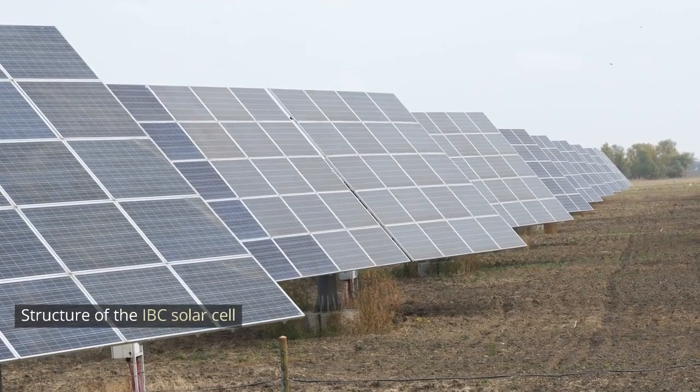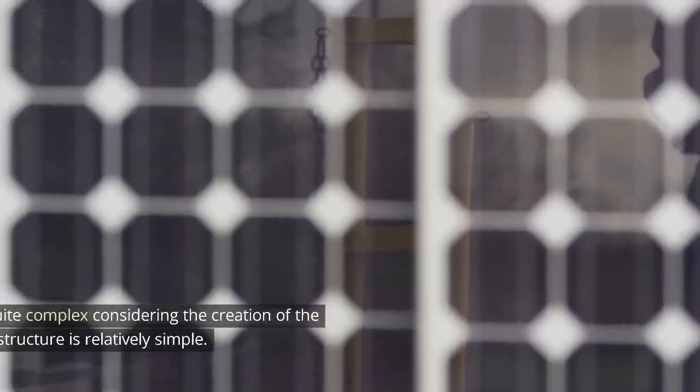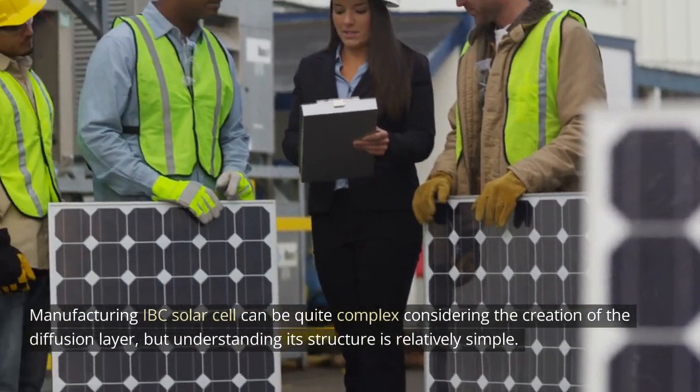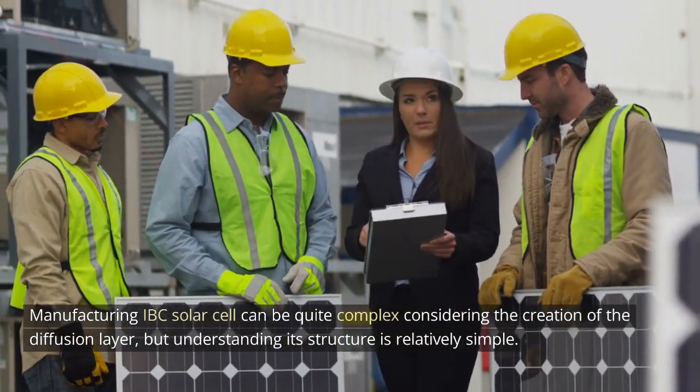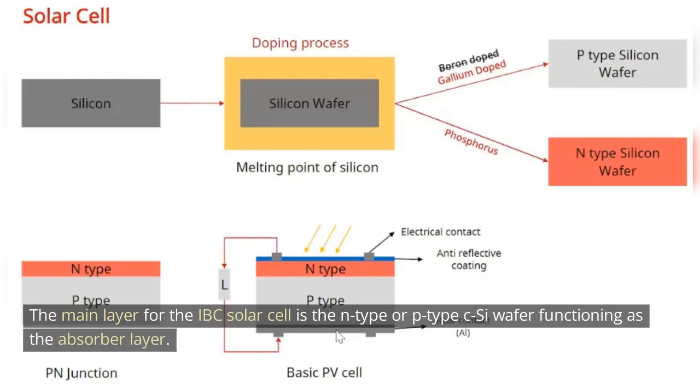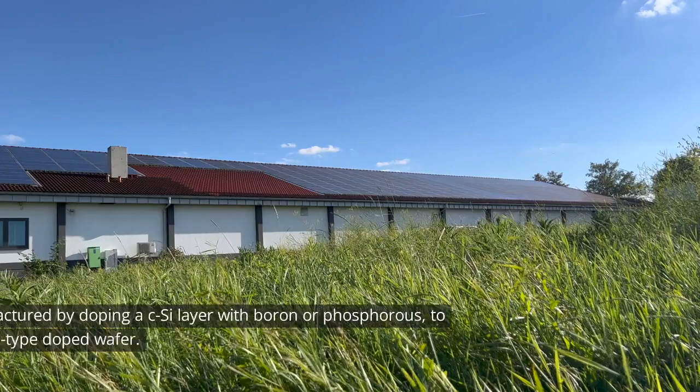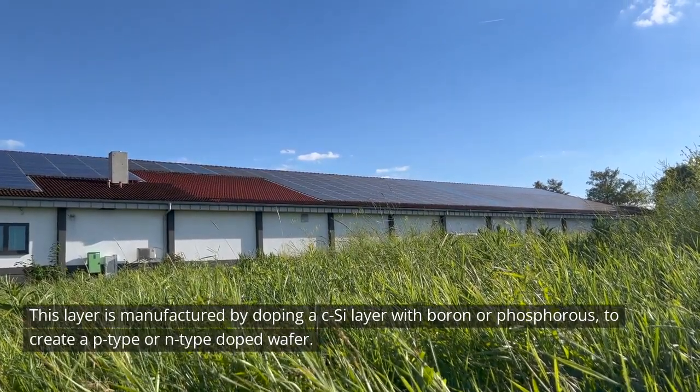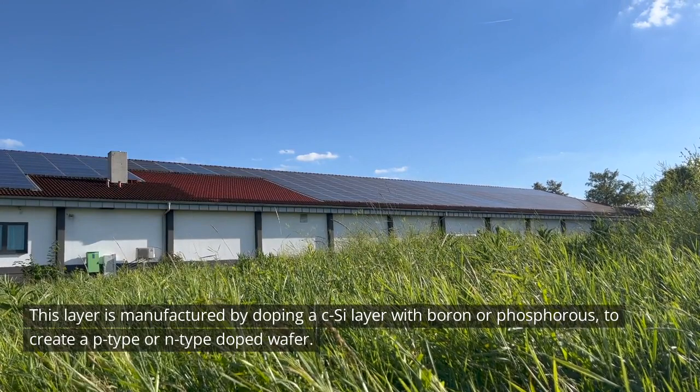Structure of the IBC solar cell. Manufacturing IBC solar cells can be quite complex considering the creation of the diffusion layer, but understanding its structure is relatively simple. The main layer for the IBC solar cell is the n-type or p-type c-Si wafer functioning as the absorber layer. This layer is manufactured by doping a c-Si layer with boron or phosphorus to create a p-type or n-type doped wafer.